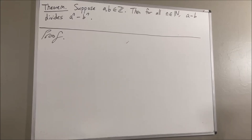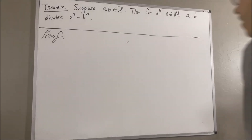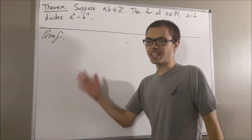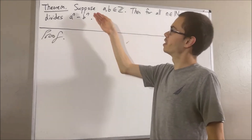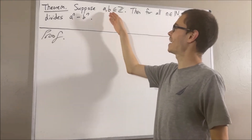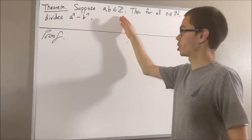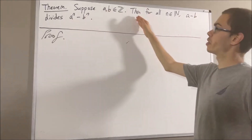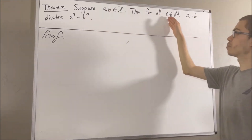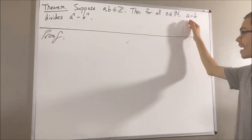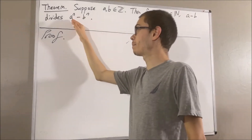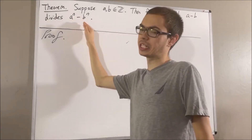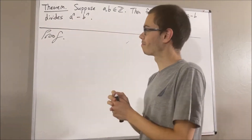Hello! In this video, we are going to prove the following theorem. Suppose A and B are integers, then for all natural numbers n, A minus B divides A to the power of n minus B to the power of n.